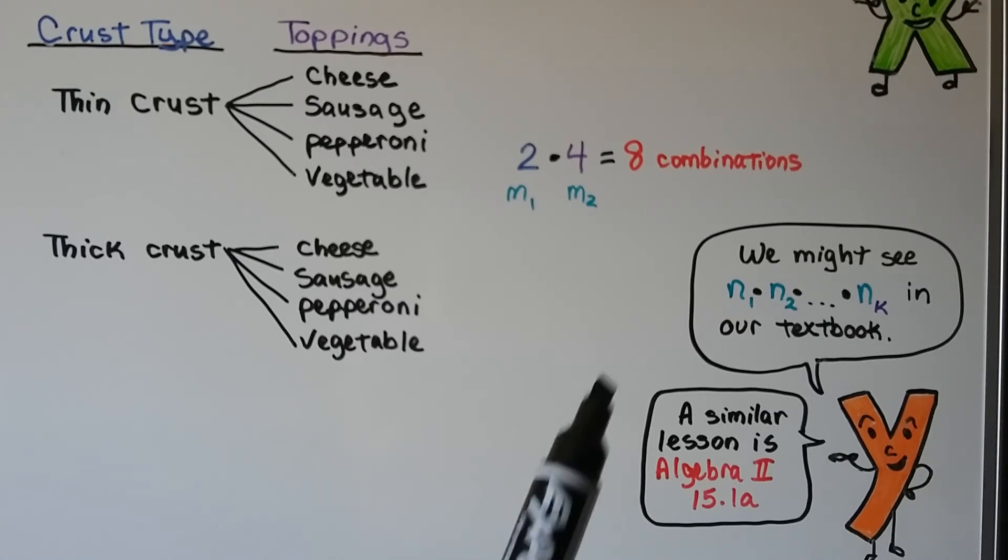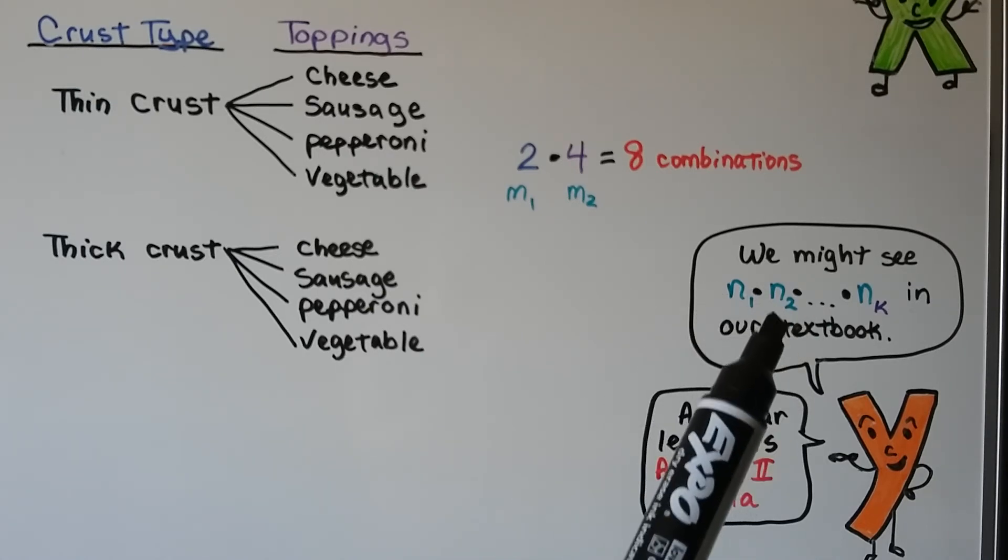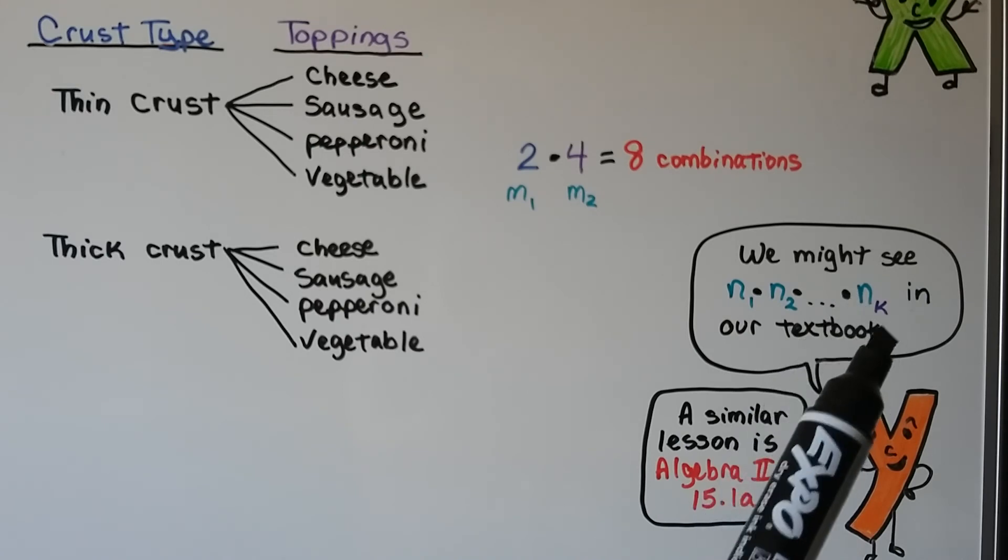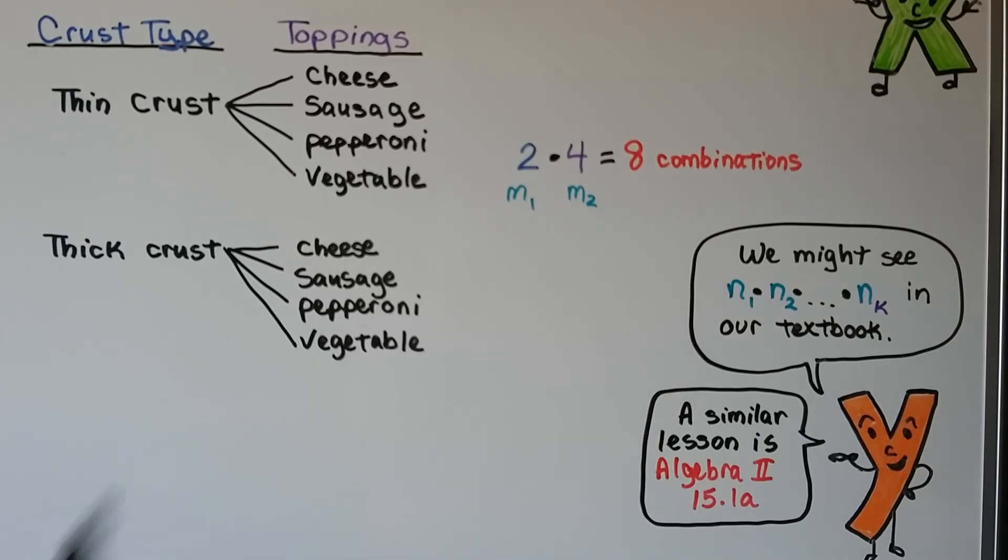Now, you might see n sub 1 and n sub 2 to n sub k in some textbooks. Depends on which textbook company you have. I know we did this in Algebra 2. It's the same thing. They're just using a different variable to represent each event.